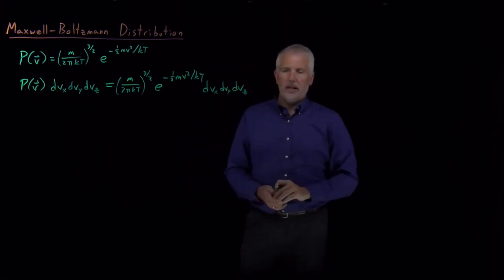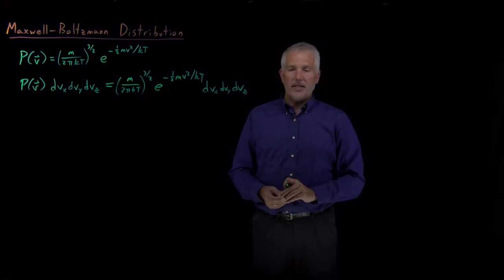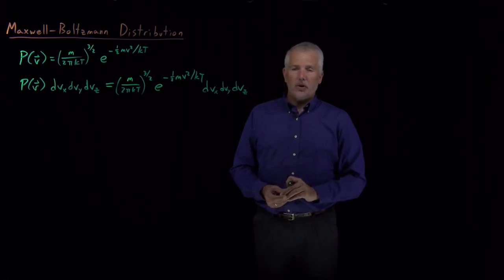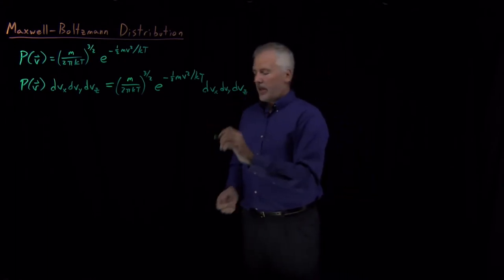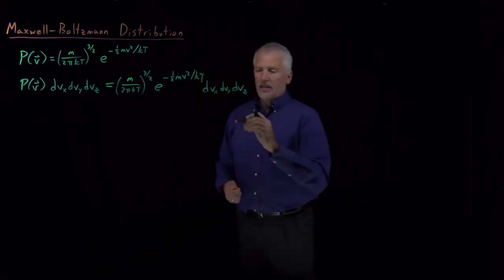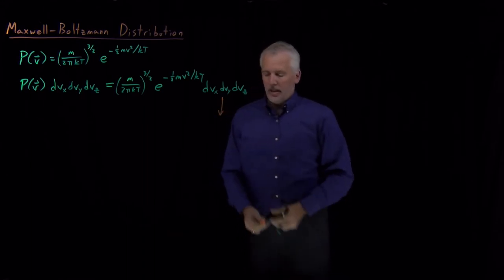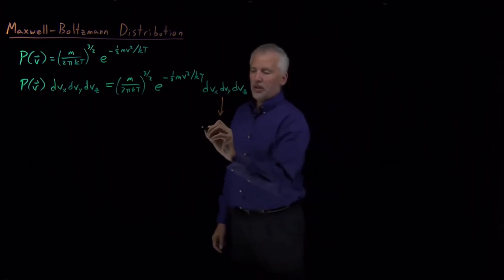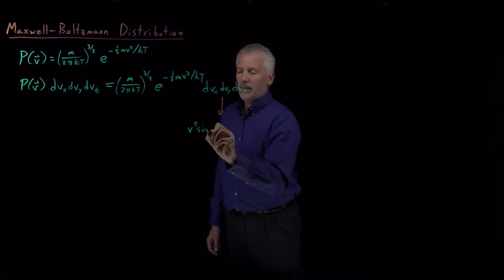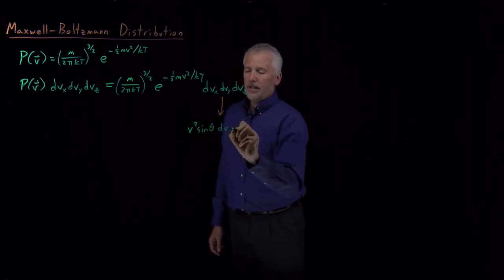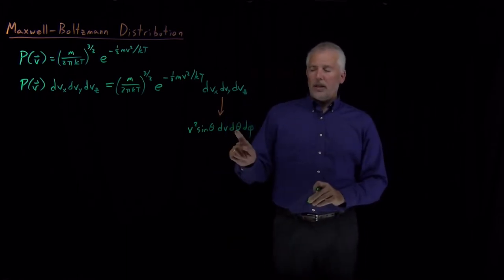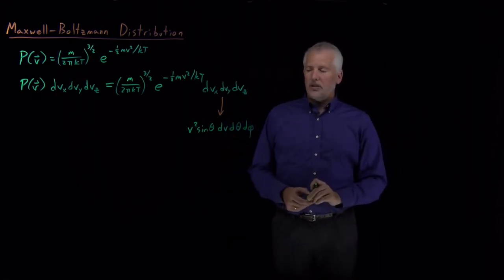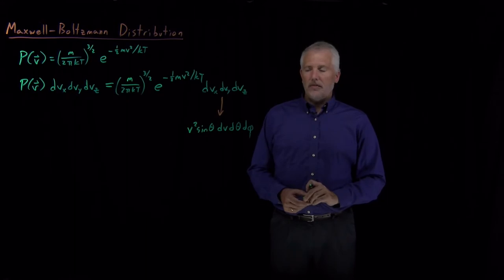Just as in Cartesian coordinates x, y, z the spherical polar equivalent volume element is r² sinθ dr dθ dφ, the same applies here. When we convert velocities in the x, y, z dimensions into spherical polar velocity coordinates, we need v² sinθ dv dθ dφ, where theta and phi are the angles that the velocity vector has.